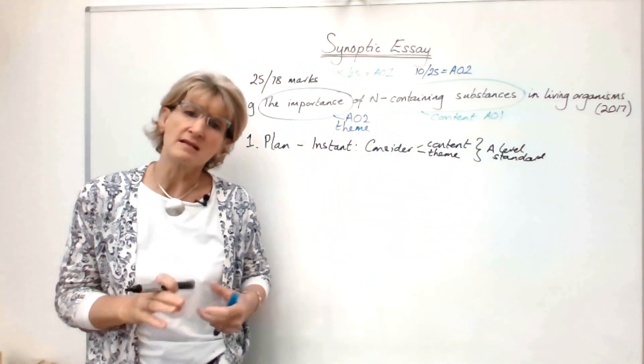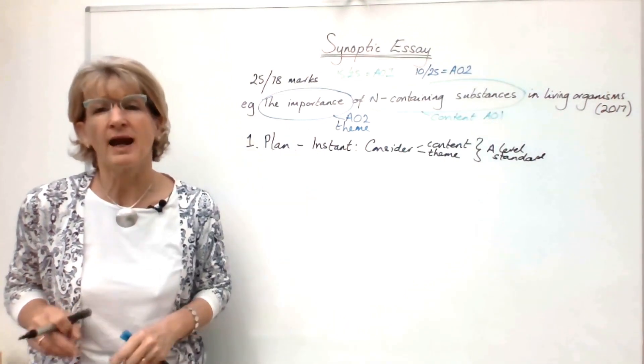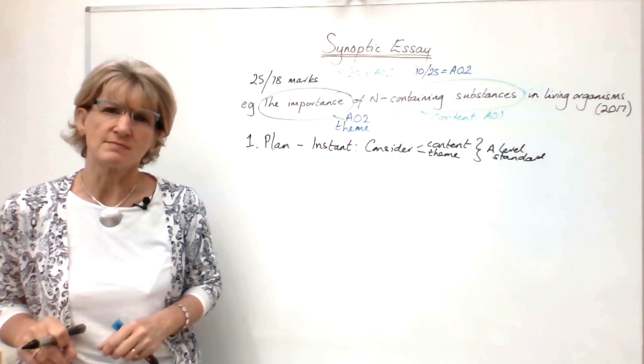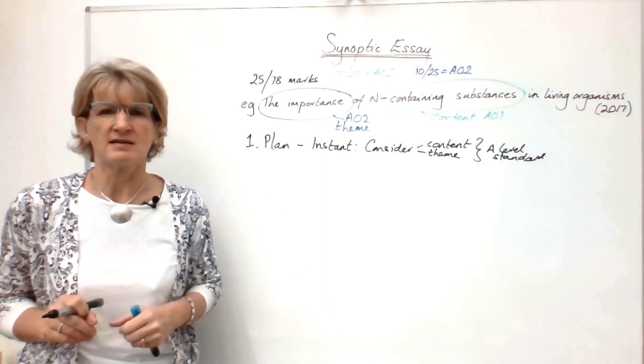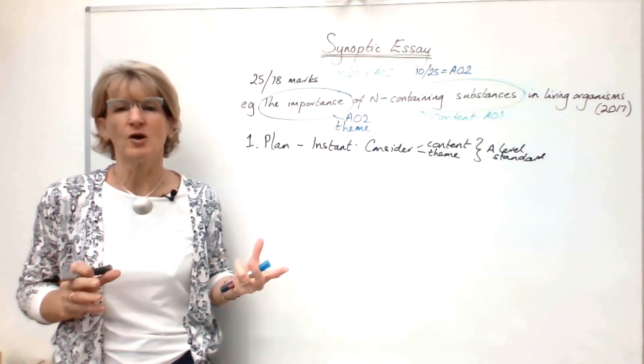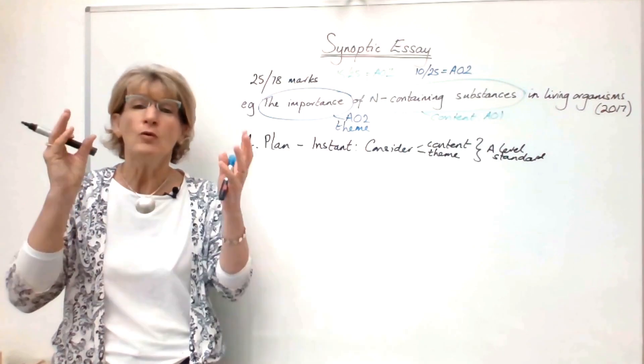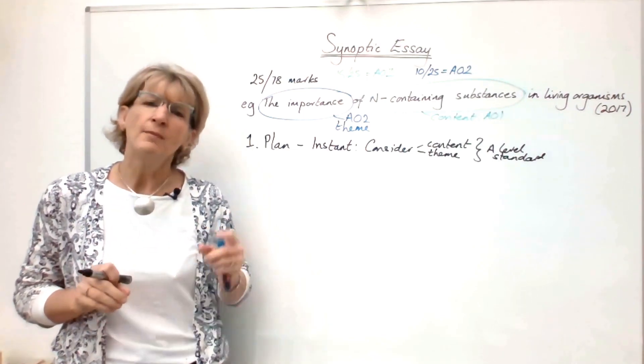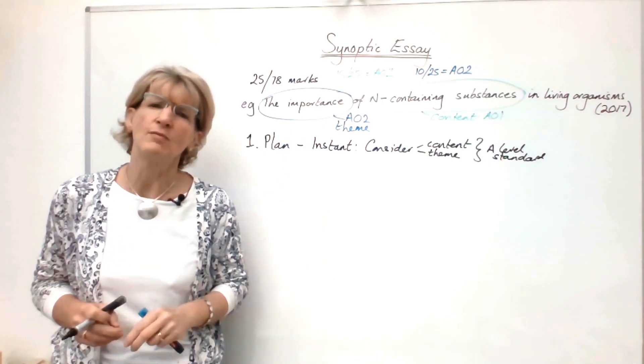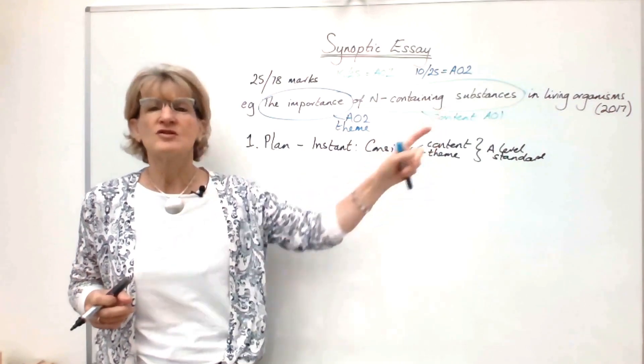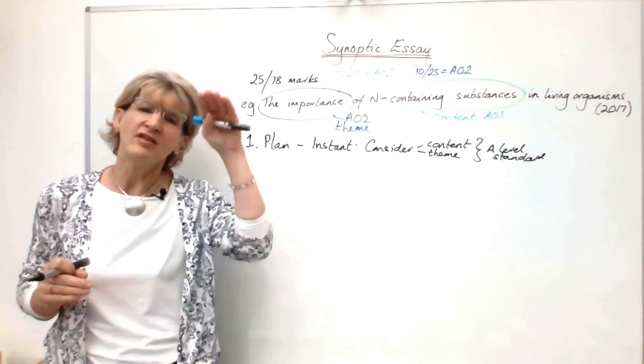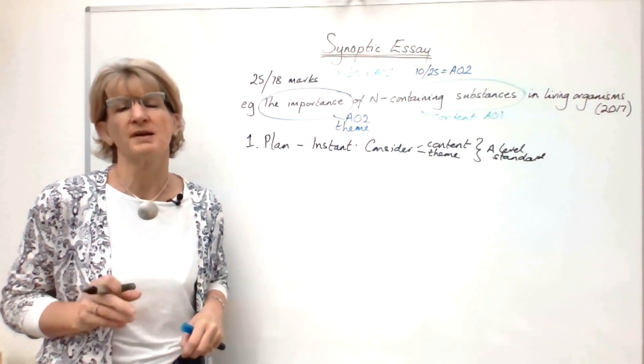This essay title came from 2017. The other essay title was the importance of diffusion to living organisms. The majority of students chose the other essay title, but this essay title got the higher mean mark. I suspect that's because students thought they knew about diffusion but maybe didn't think carefully enough how they would address the importance of each example. So first tip, instant plan at the beginning of Paper 3.